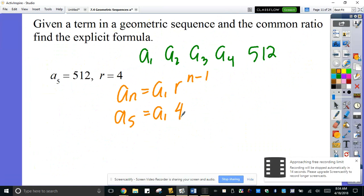So a sub 5 is 512. 512 is equal to a sub 1 times 4 to the 4, which is 64. So for the a sub 1 there, 512 divided by 64 will give me a sub 1 is equal to 8.